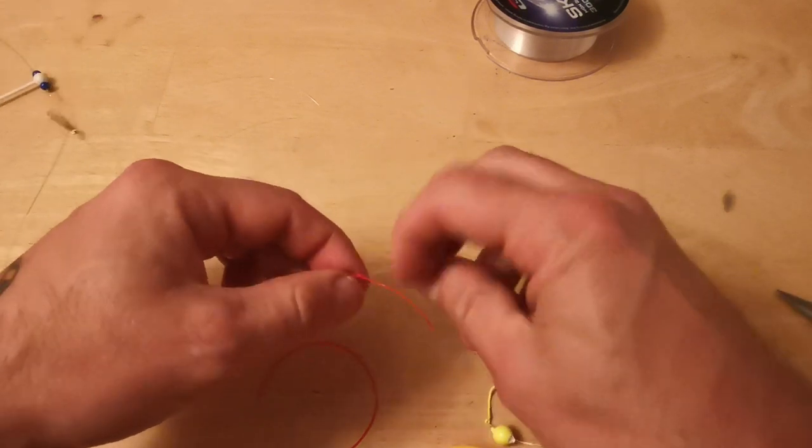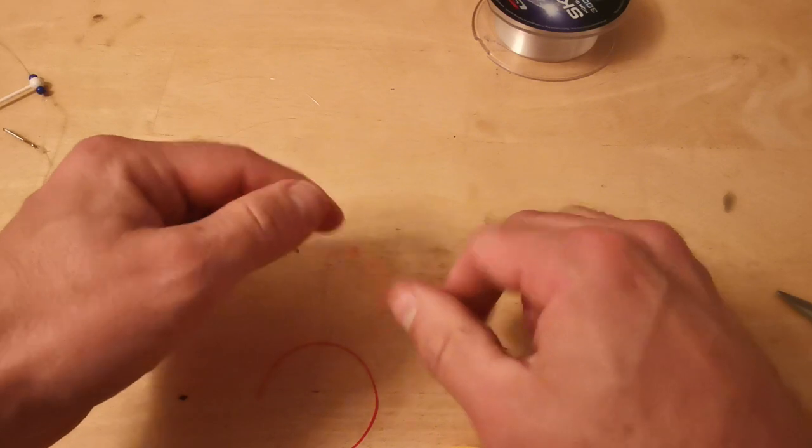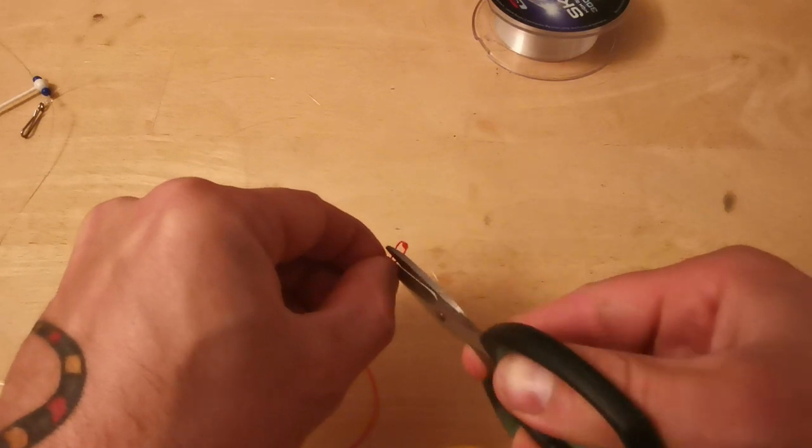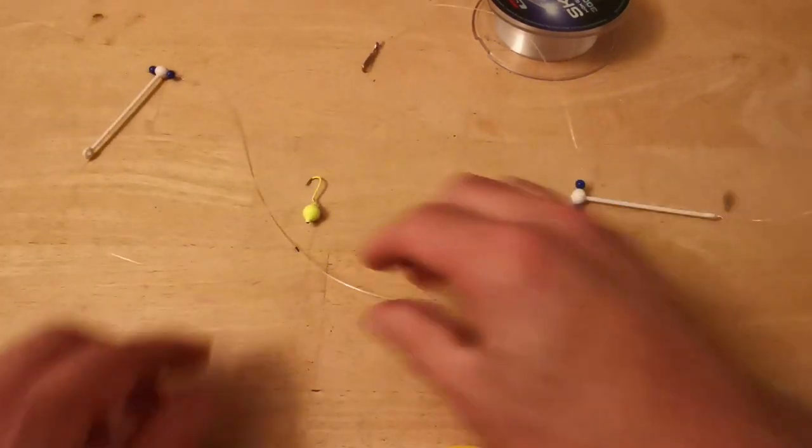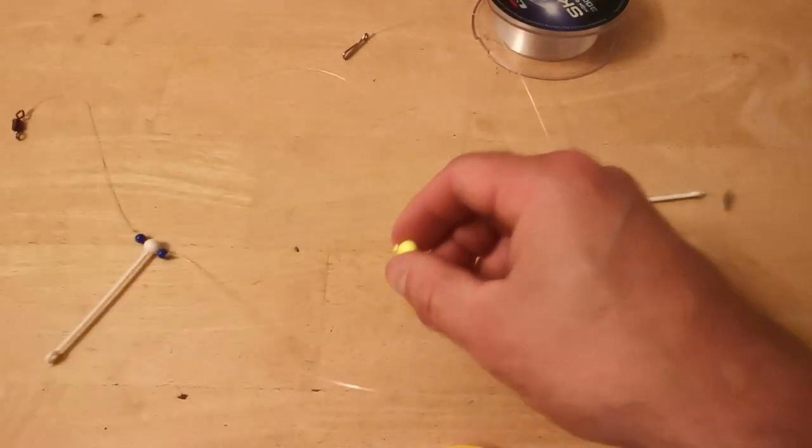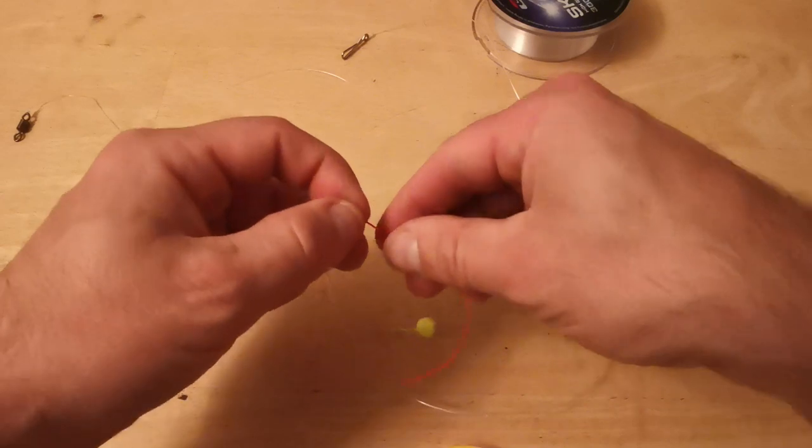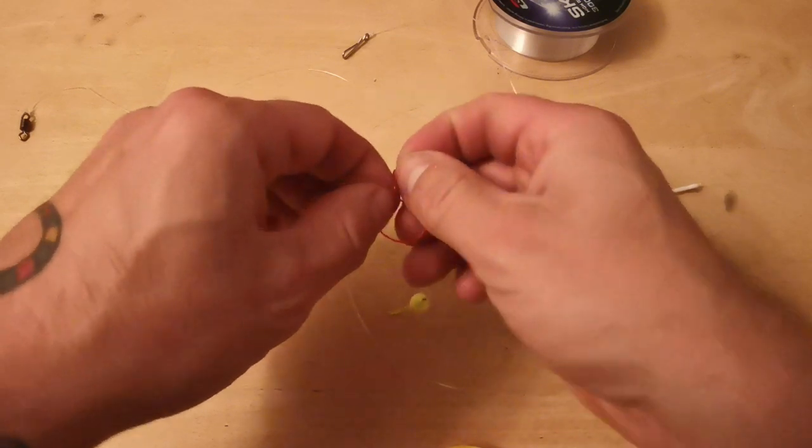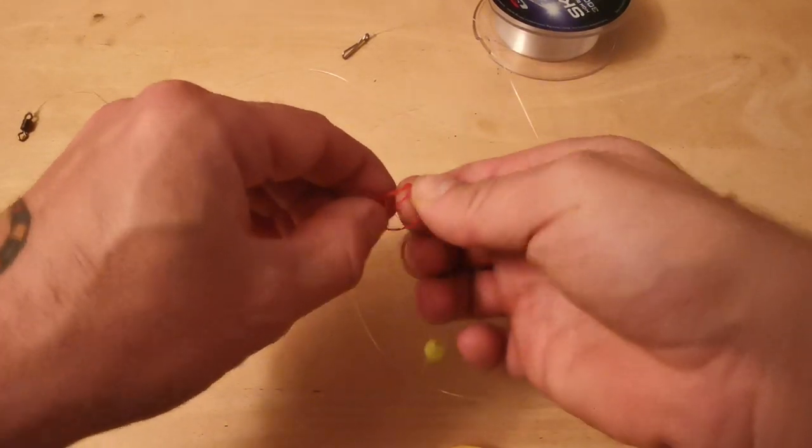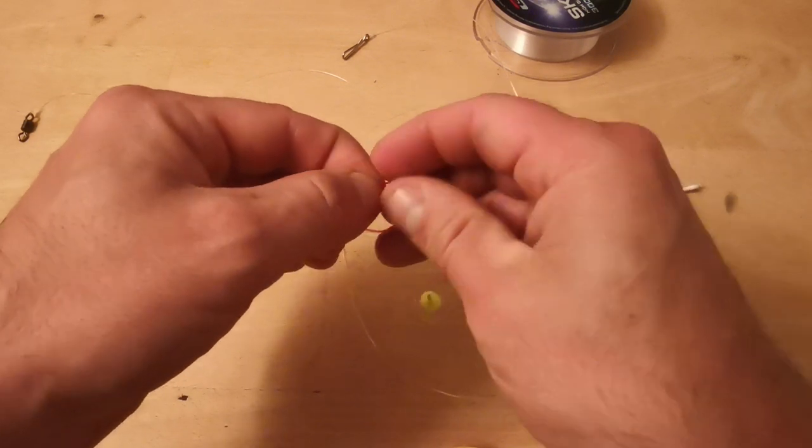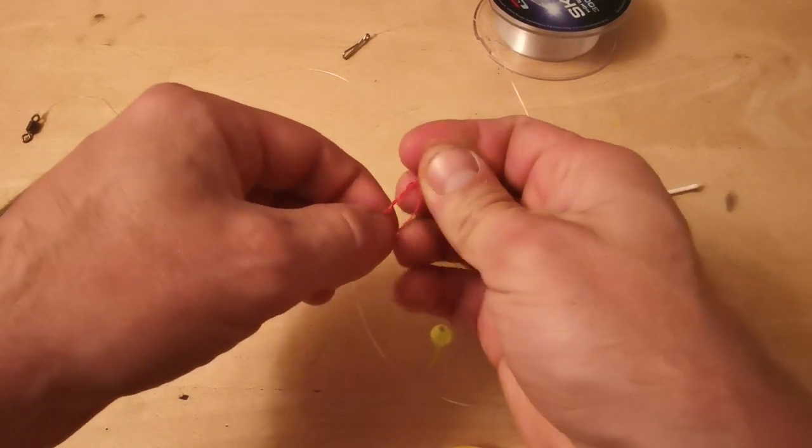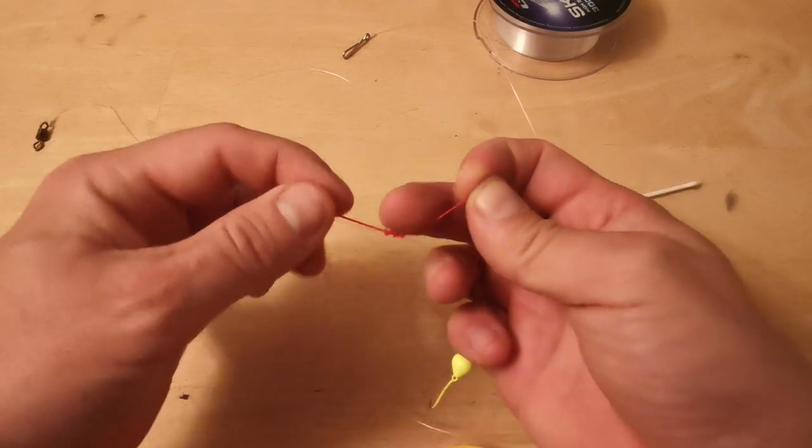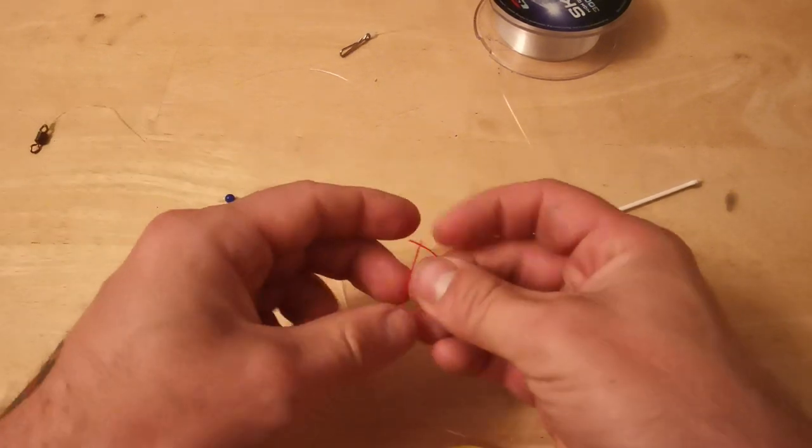Tighten that up. We don't want these tag ends to be that long, but we do want tag ends to stop it going across. That's your first one. And again on the top snood, do one more sliding stop knot. Pull that tight, trim off the tag ends, and that is the rig completion.